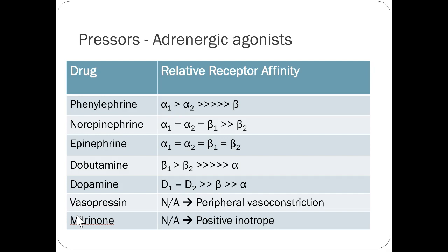CRNAs and anesthesiologists often run a continuous low phenylephrine drip and titrate anesthesia on top of it, though some anesthesiologists disagree with this approach. If you work post-op or in procedural areas, don't be surprised to see phenylephrine used frequently. As a pressor for ICU patients, it's a second-line or adjunct option rather than first-line.